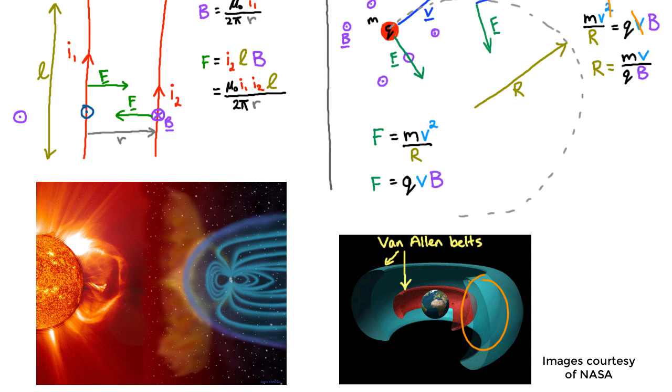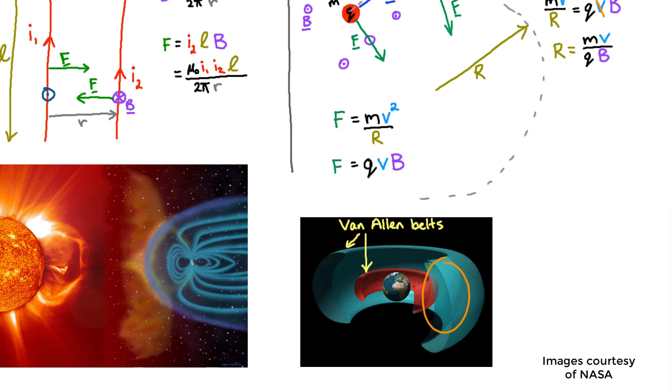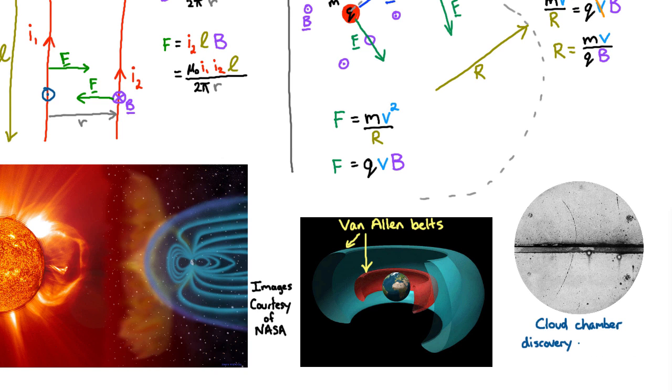And you can also use a known magnetic field to figure out what charge a particle has, because the different charged particles will move with different radii. And this is used extensively in a device called a cloud chamber.